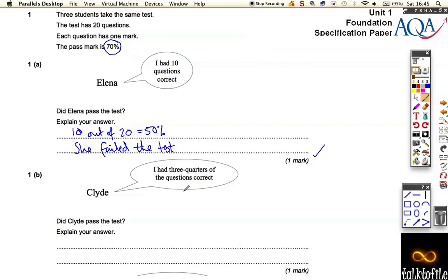Next one said, I had three quarters of the questions correct. Well, three quarters of the questions is, you know that three quarters, or you should do, is 75%. If you say something like three quarters equals 75%, then you can instantly see that you passed the test. Another easy mark.